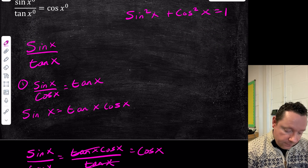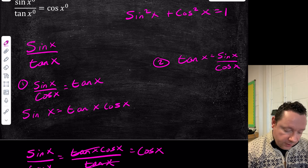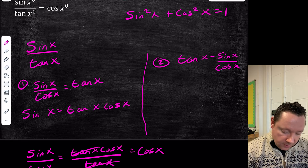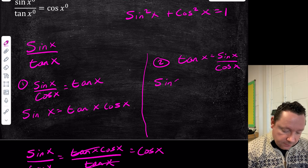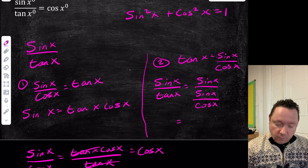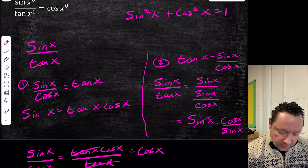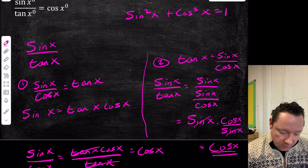Method 2: Start with tanx = sinx/cosx, then substitute tanx directly. sinx/tanx becomes sinx divided by (sinx/cosx). Dividing by a fraction is the same as multiplying by the reciprocal — flip the second fraction upside down — giving sinx times cosx over sinx. The sinx's cancel, leaving cosx. Whichever method you prefer — I think the first one is easier.